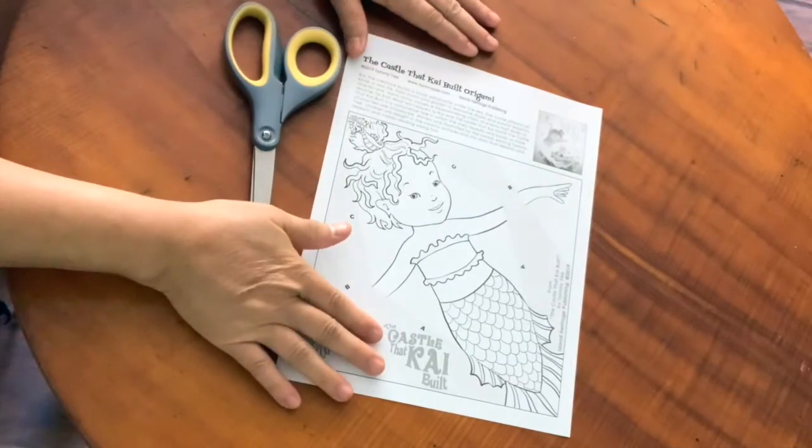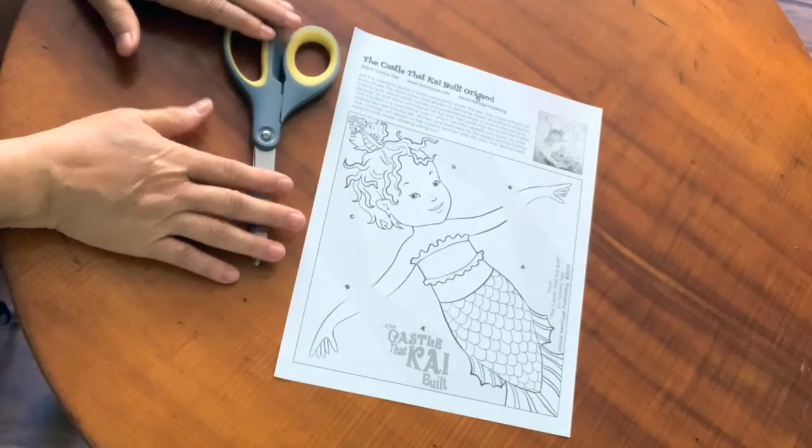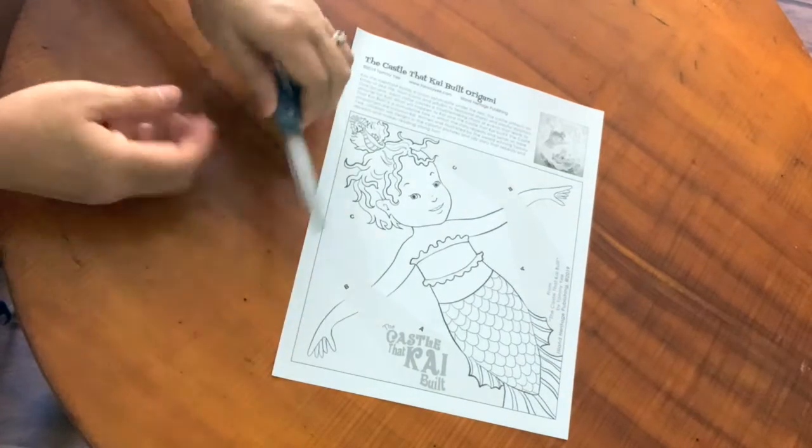We have our origami and we have our scissors. Let's begin by cutting out our origami.